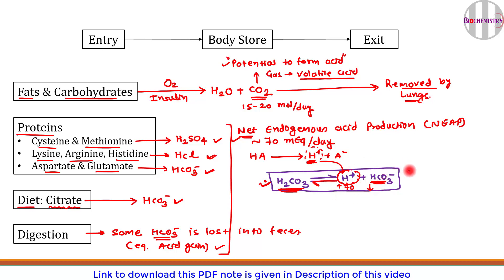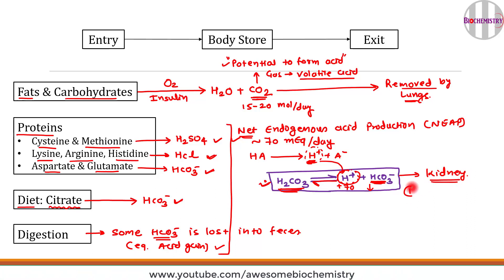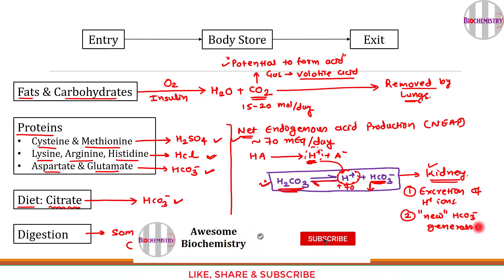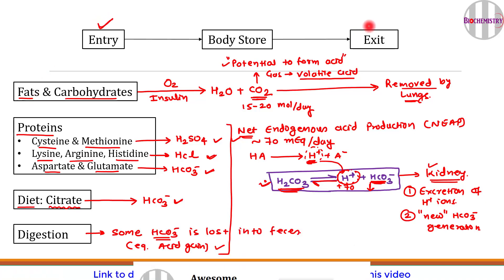How is this reversed? It is reversed by the kidneys. Kidney performs two functions: first, excretion of H⁺ ions — the extra 70 milliequivalents of fixed acid generated each day must be excreted; and second, regeneration of the bicarbonate that was consumed during buffering — the kidney generates new HCO₃⁻.